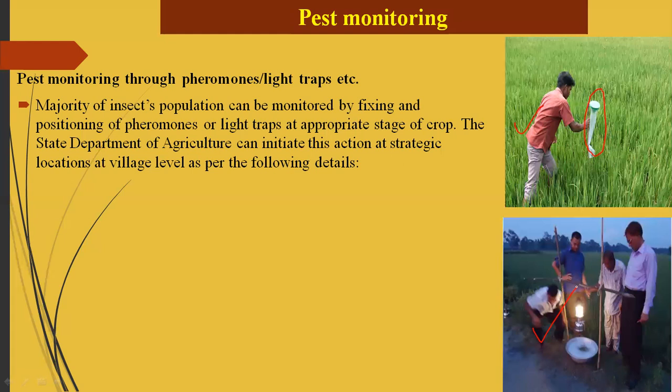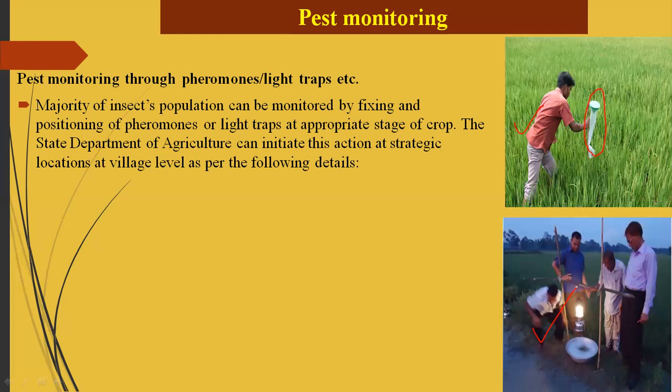The state department of agriculture can initiate this action at strategic locations at village level, using different tools like pheromone traps. Generally, five traps per hectare may be used to monitor yellow stem borer moth population. Recording of incidence is essential using this pheromone trap.